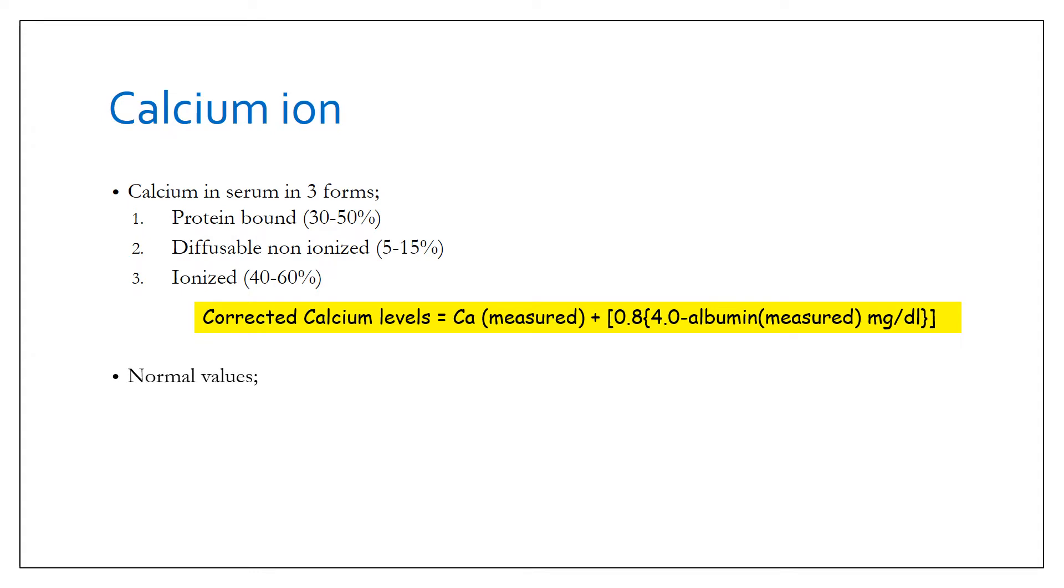The normal values of serum calcium total are 9 to 11 mg per deciliter, and if you translate in milliequivalents per liter it is 4.5 to 5.5. Ionized calcium has values of 4.25 to 5.25 mg per deciliter or 2.2 to 2.5 milliequivalents per liter.